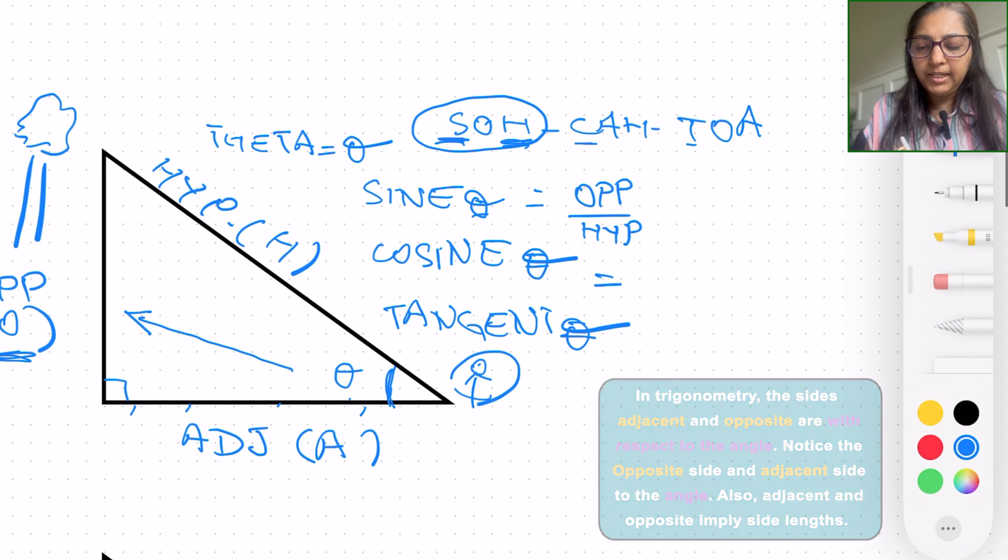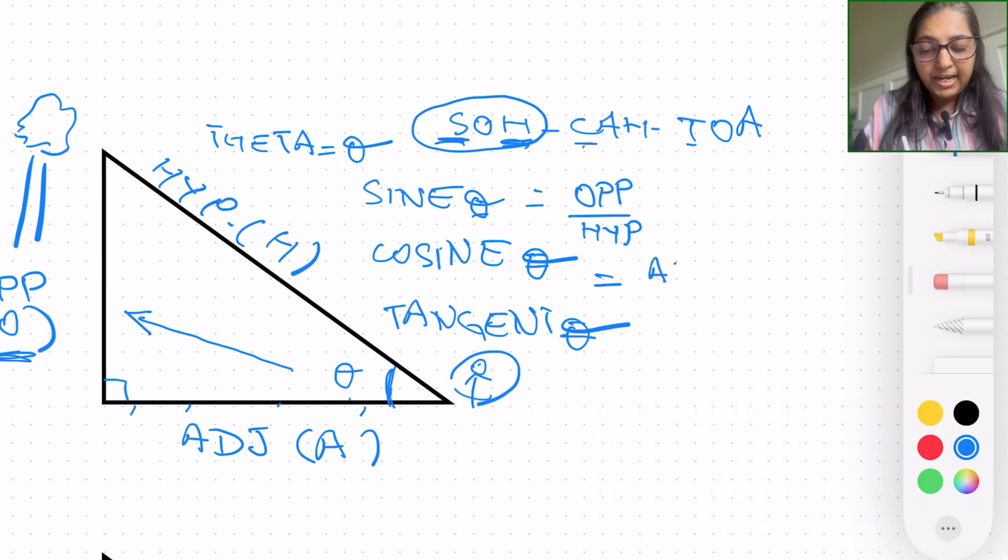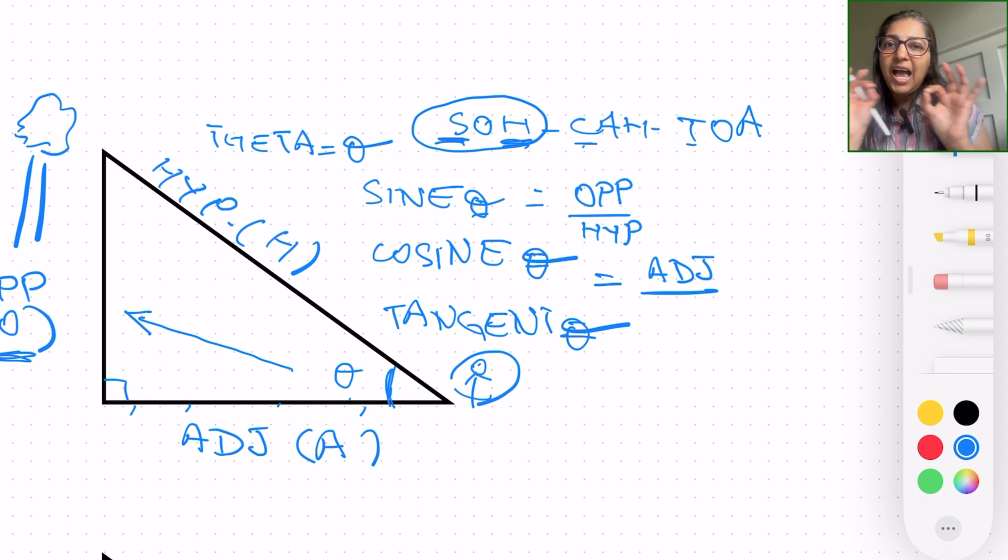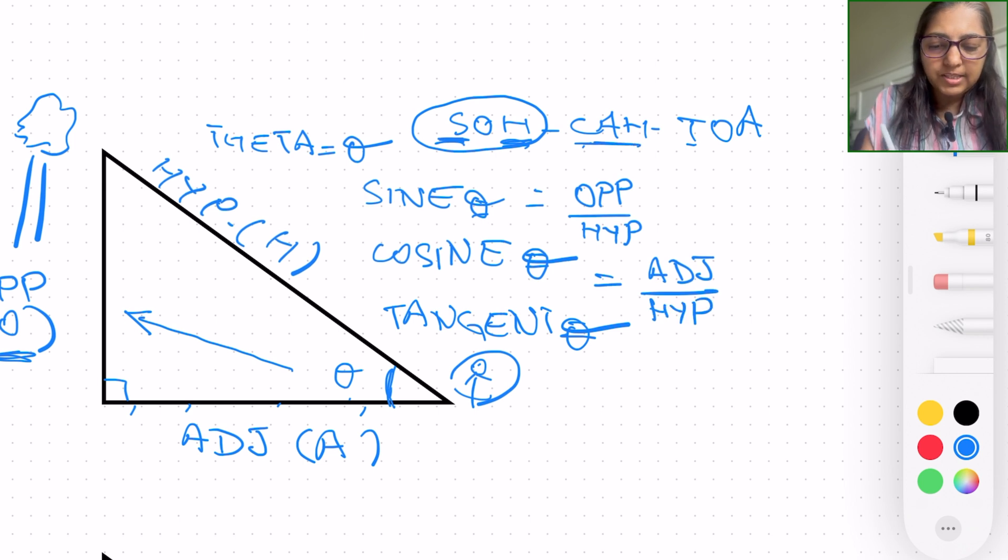Same way, cosine: the first alphabet is cosine, adjacent with respect. And when I'm saying opposite, hypotenuse, adjacent, we're talking about the side lengths of these triangles. So adjacent over the hypotenuse, that brings us to the second one.